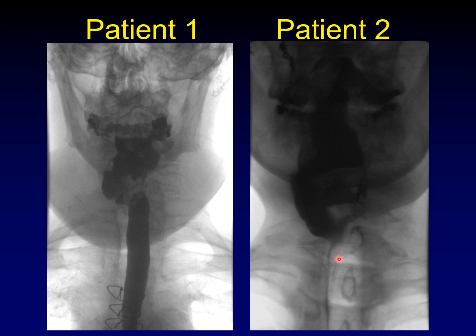What muscles are we talking about? We're talking about the pharyngeal constrictors, which are innervated by cranial nerve 9 and cranial nerve 10. So if you have abnormalities of cranial nerve 9 and 10, then you will get preferential flow to the side of the lesion.